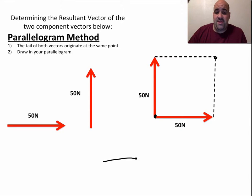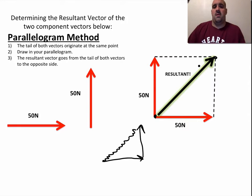Whereas when we went to tail-to-tip, we went like that, like that, and the resultant was this one. We're going to get the same thing here. The resultant is up there. And we can do some trigonometry, some geometry.